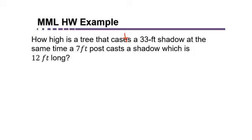This actually involves similar triangles because when the sun casts a shadow on two different objects it's going to cast it at the same angle.